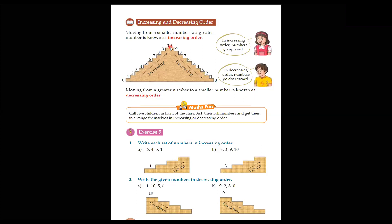So the greater number is 10 and the smaller number is 0. Moving from a greater number to a smaller number is the decreasing order. Now we have to do one exercise — Exercise number 5 on page number 22. Number 1 is: write each set of numbers in increasing order. We have to write the numbers on the stairs in increasing order.